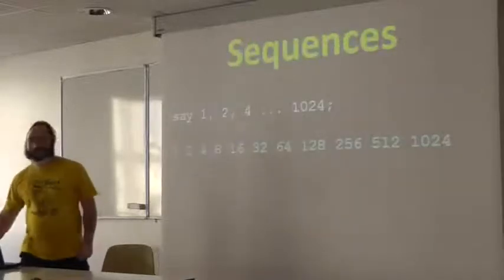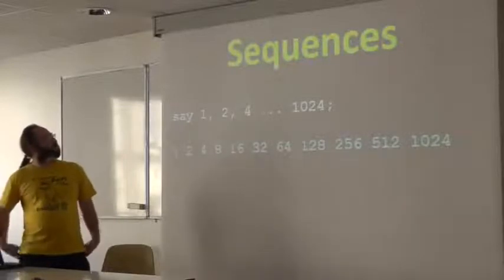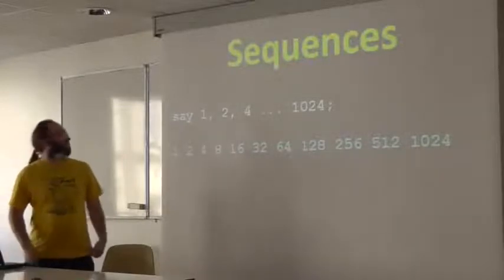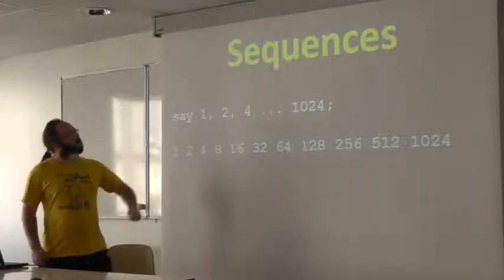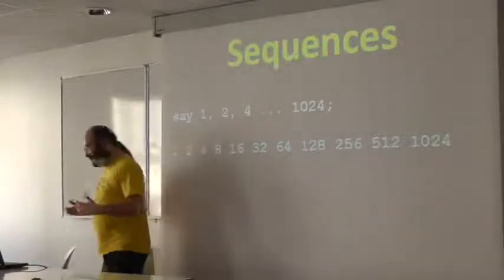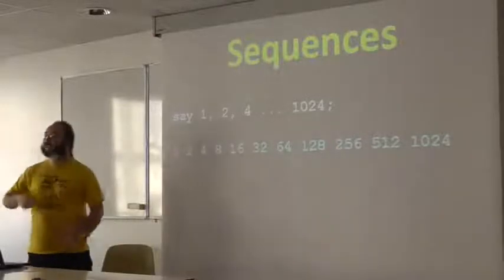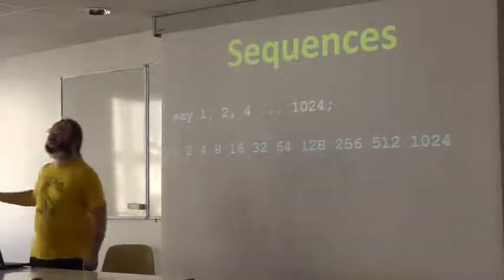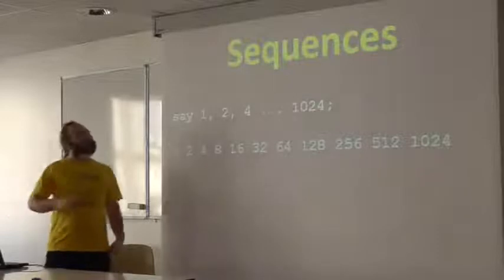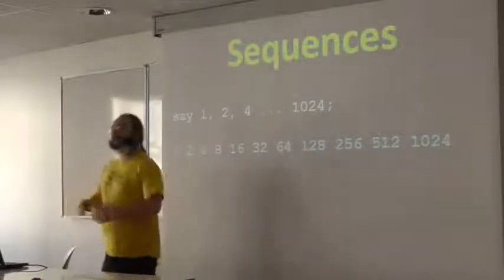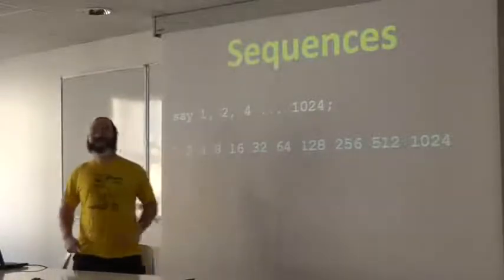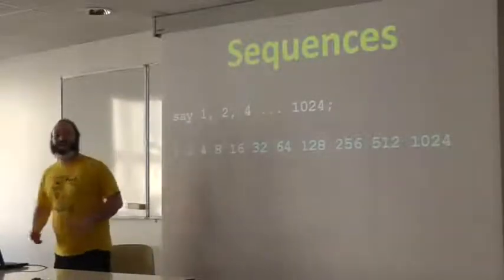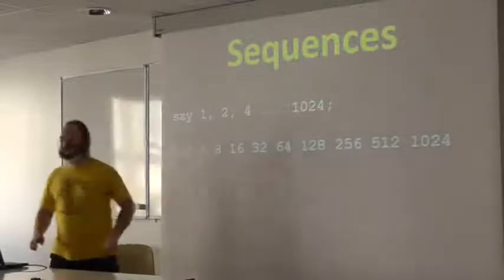Sequences. So, I want to get all the numbers in this geometric progression. We could just write a range. But ranges are a little bit silly. They only count up one at a time. But if I just add another dot, then I get a sequence instead. And that means that it'll look at these and say, huh, I learned geometric progressions at school. And it'll work it out for us.